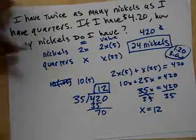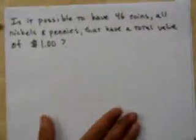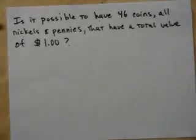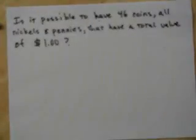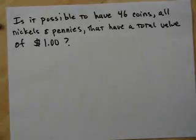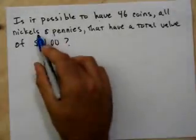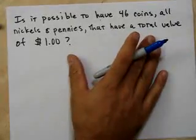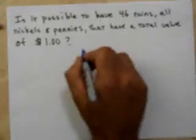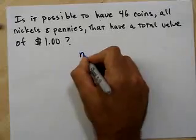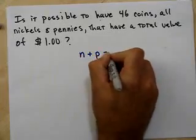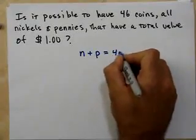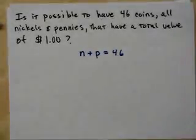Let's try another one of these money problems, right? Is it possible to have 46 coins, all nickels and pennies, that have a total value of $1? Well, let's see. We're talking about value again. And here we have all nickels and pennies. Okay. And 46 coins all together. So, I know that my nickels plus pennies, my nickels plus pennies has to equal 46, right? Does that make sense? All right.